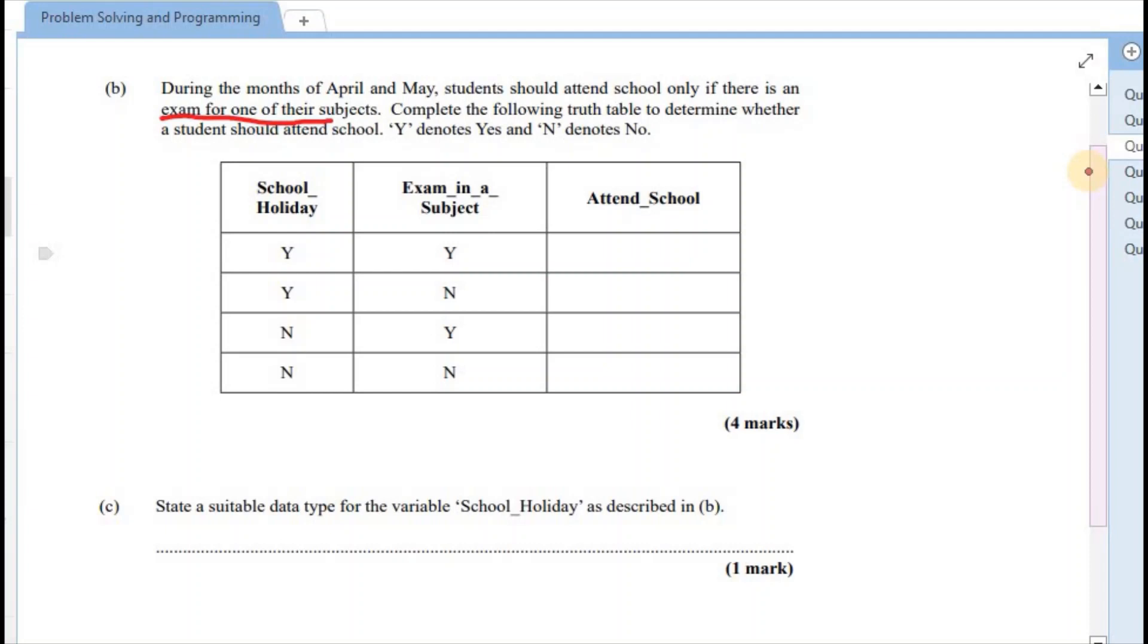So for this example, the student is on holiday, but that is not where we are testing for the criteria. As long as there is a Y for the subject, then that means that the output should be Y because the student attended school based on the exam. So for this, we are looking again based on the exam. Even though they are on holiday, yes, they did not have any exams. So that's a no. And the output would have been a no.